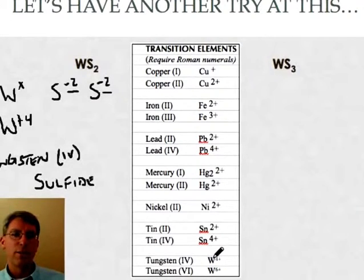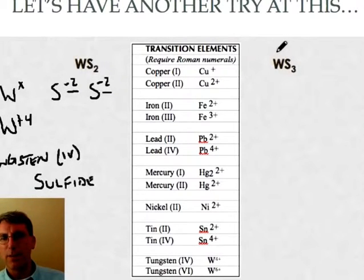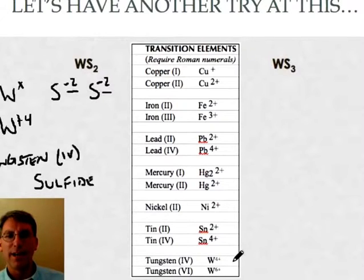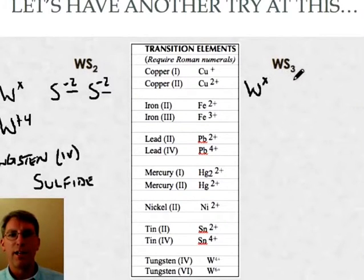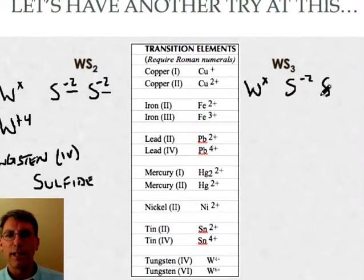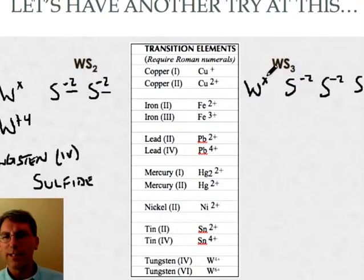Okay now of course since the way I've set this thing up with tungsten with three S's you can pretty much guess that it's going to be the plus six ion. But let's walk through it anyway and say okay I've got tungsten but I don't know what charge it has. And I've got three sulfurs that each take a minus two charge. So what charge does this tungsten have to take? Well it's got to take a plus six.